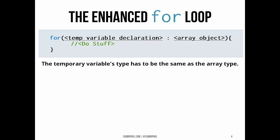The general form is a lot simpler than a regular for loop. You can see what it looks like here. We have some temp variable declaration for whatever the current element will be, and then we're going to have our array object. The type of that temporary variable has to be compatible with the type of the array.